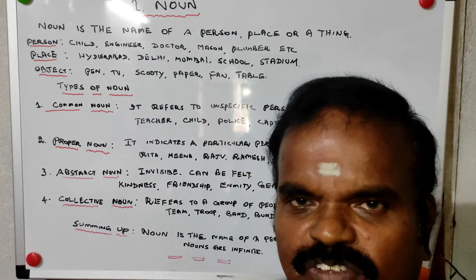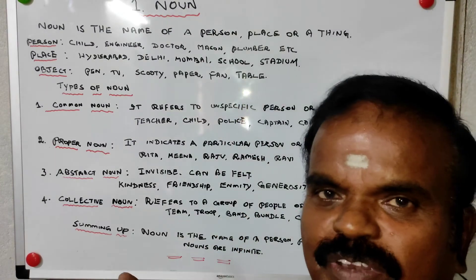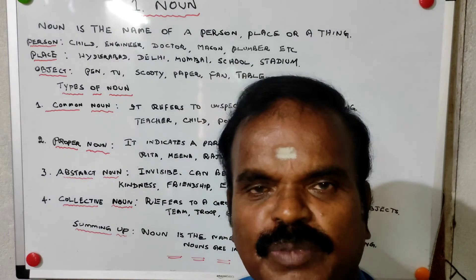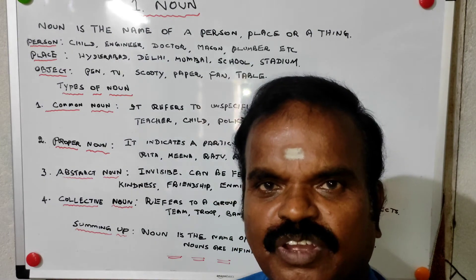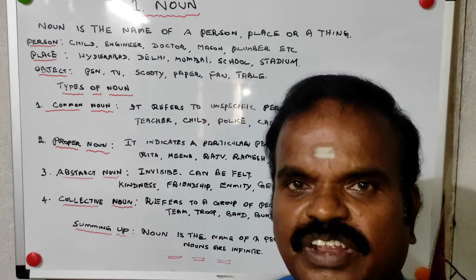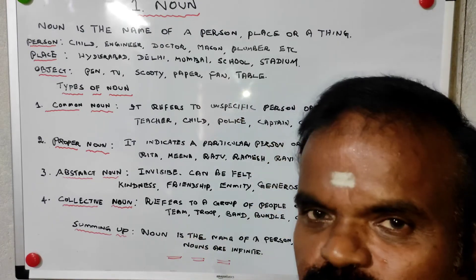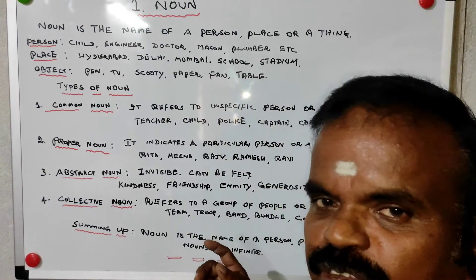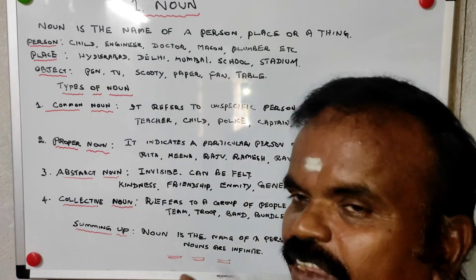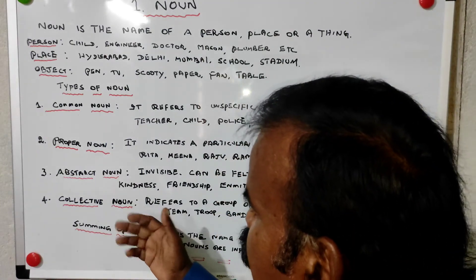Collective noun refers to a group of people or a heap of objects. For example, 'team' is a collective noun — a team may have 10, 20, or more members. Other examples: troop, band, bundle, committee. A bundle has more than one item, and a committee is not a single person — it may be many persons.